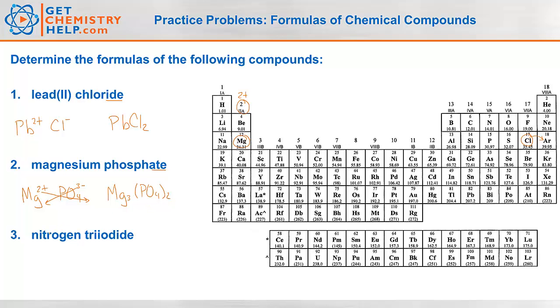Nitrogen triiodide. The prefix 'tri' tells me it must be a molecular compound. 'Tri' means 3 iodines, so the formula is NI₃.